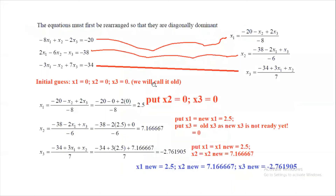For the Gauss-Seidel method, the initial guess is always x1 = 0, x2 = 0, x3 = 0. This is the trivial solution, and we use the iterative formula to find the actual answer. For the first iteration, we use the first equation for x1, substituting x2 = 0 and x3 = 0 to get a new x1 = 2.5.